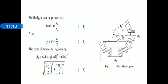Applying the Pythagorean theorem to triangle ABO, the cone distance AO = √(AB² + BO²) = √((dp/2)² + (dg/2)²). Using this relation we get the value of cone distance.